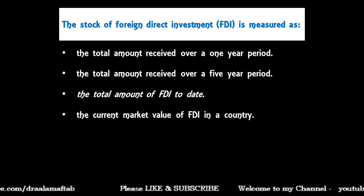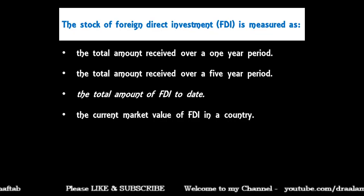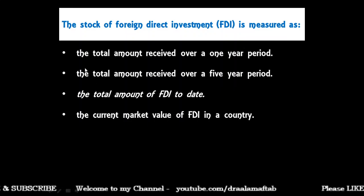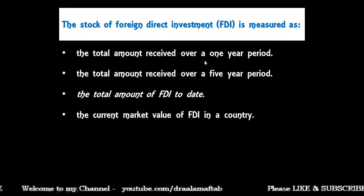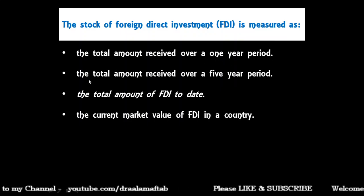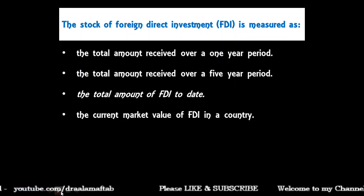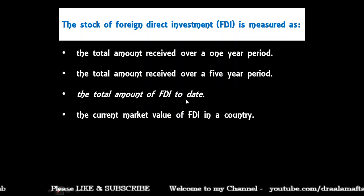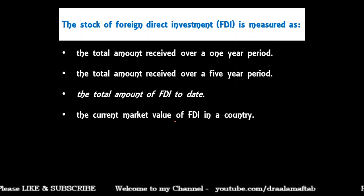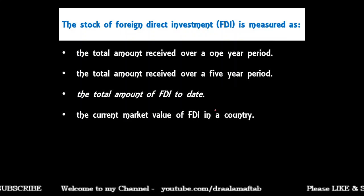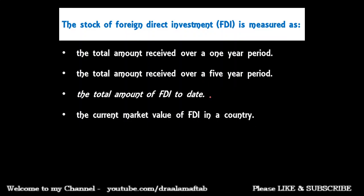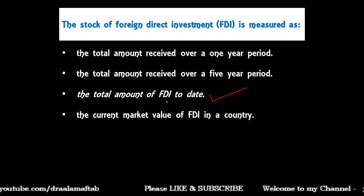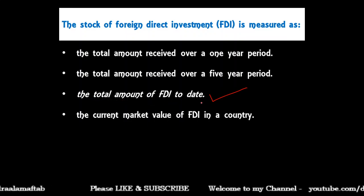The first question: the stock of foreign direct investment is measured as — the total amount received over a one-year period, the total amount received over a five-year period, the total amount of FDI to date, or the current market value of FDI in a country. FDI is measured at a point of time, so the correct answer is the total amount of FDI to date — it is the accumulated amount.